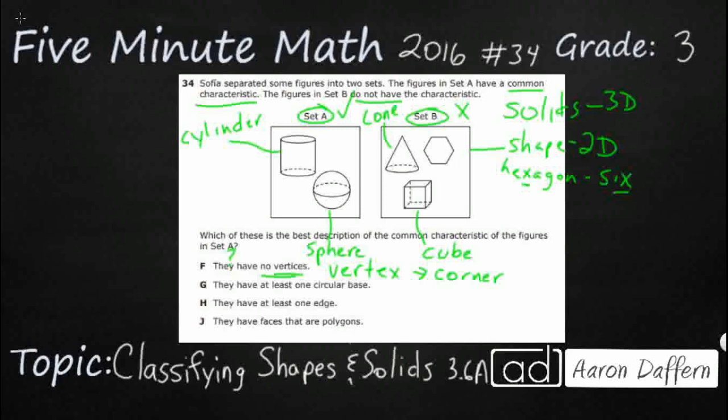What about set B? If it's false for set B, that means it does have vertices. Well, we know our cube has got a ton of vertices. It's got eight corners. This hexagon has got six vertices, those where the sides meet.